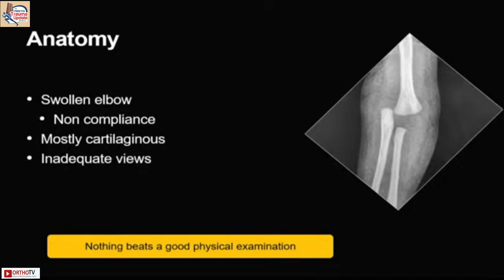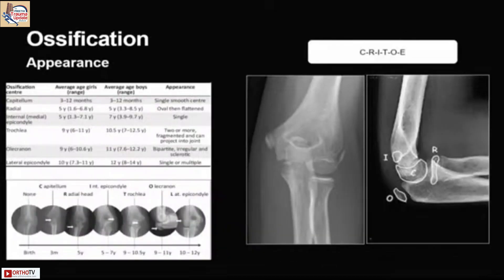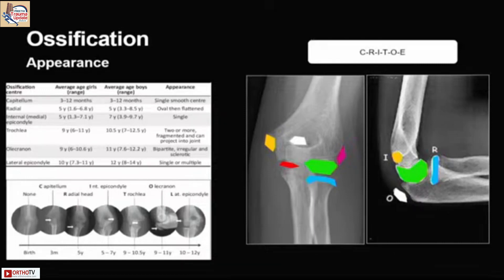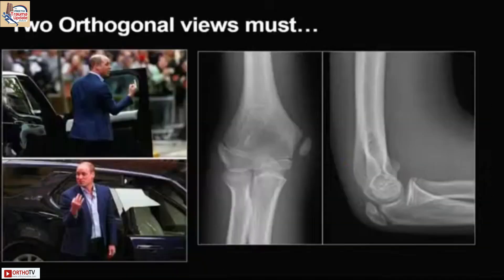We all know about the ossification centers. The capitulum appears first, then the radial head, then the medial epicondyle, the trochlea, olecranon, and lastly the lateral epicondyle. That's the sequence which is almost always followed, so we must match age with this ossification sequence.